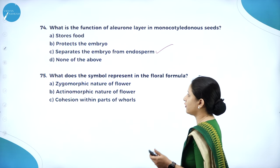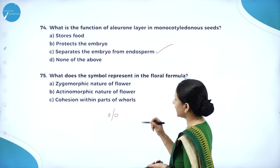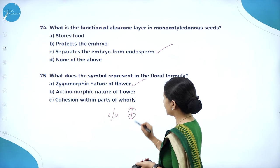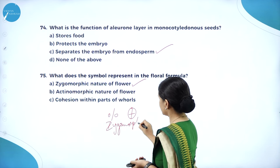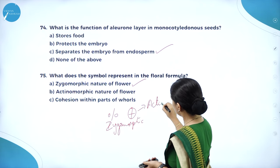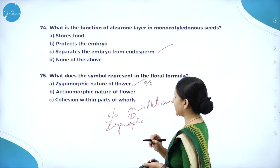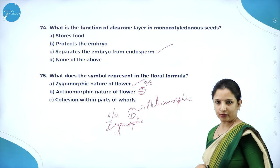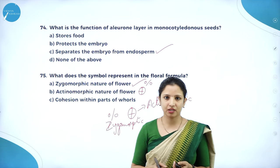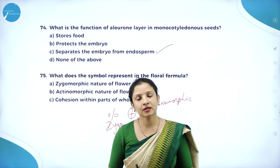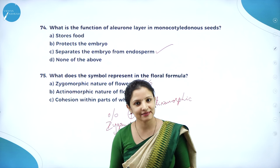What do the symbols represent in the floral formula? A zygomorphic flower is represented by a specific symbol (bilateral symmetry), and an actinomorphic flower is represented by another symbol (radial symmetry). This was the session on different MCQ questions that can be framed from this chapter on morphology of flowering plants. We shall meet again in the next session discussing a new chapter. Thank you.